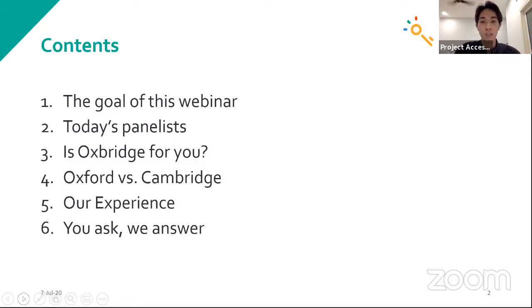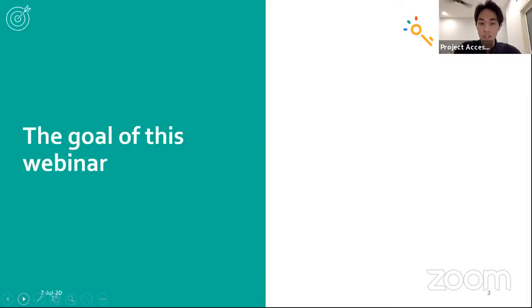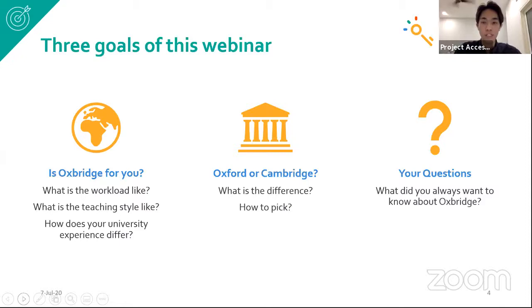The contents of today's webinar: first we'll discuss some of the goals we hope to achieve. We'll introduce ourselves, and then discuss the differences between Oxbridge and other universities and whether applying to Oxbridge is a decision you might want to make. Then we'll go about how you might choose between Oxford and Cambridge, give some personal anecdotes as to why we chose these universities and what our experiences have been like, and then move on to the Q&A session. The goal broadly is to demystify any misconceptions you might have about Oxbridge and clarify any confusion.